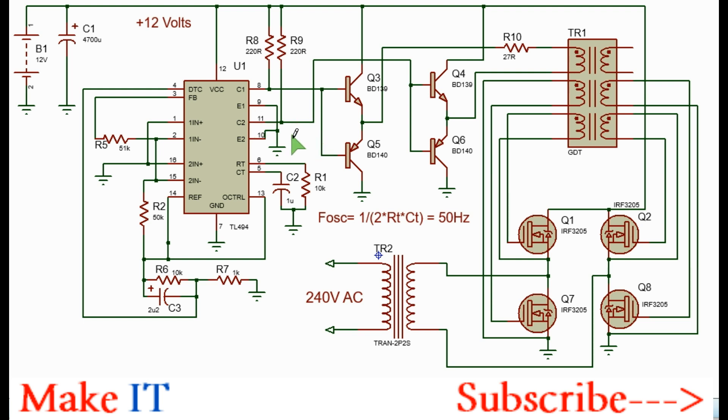When pin 8 is high this load will conduct and allow current flow from 12 volts through the primary winding of the gate drive transformer.